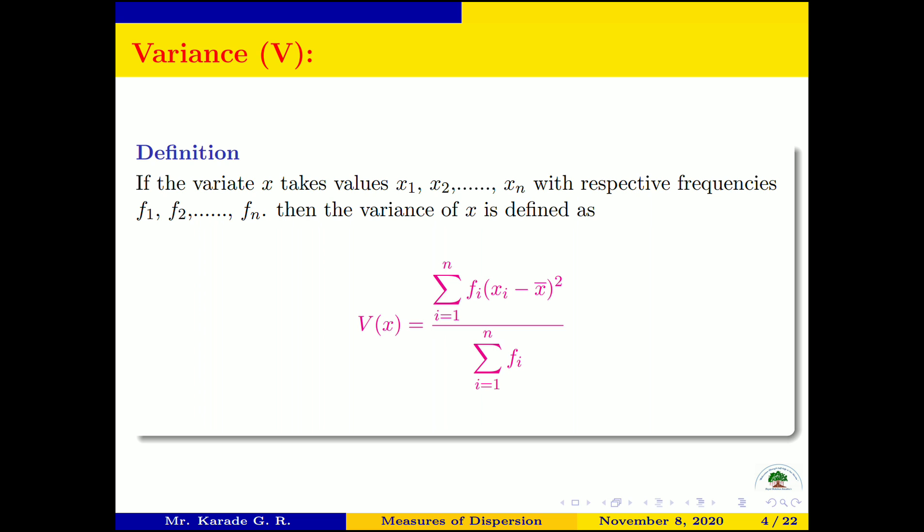The summation runs from i = 1 to i = n because there are n observations. So variance of X equals summation of Fᵢ(Xᵢ − X̄)², from i = 1 to n, divided by summation of Fᵢ from 1 to n. This is the formula for variance, where X̄ is the arithmetic mean of X.